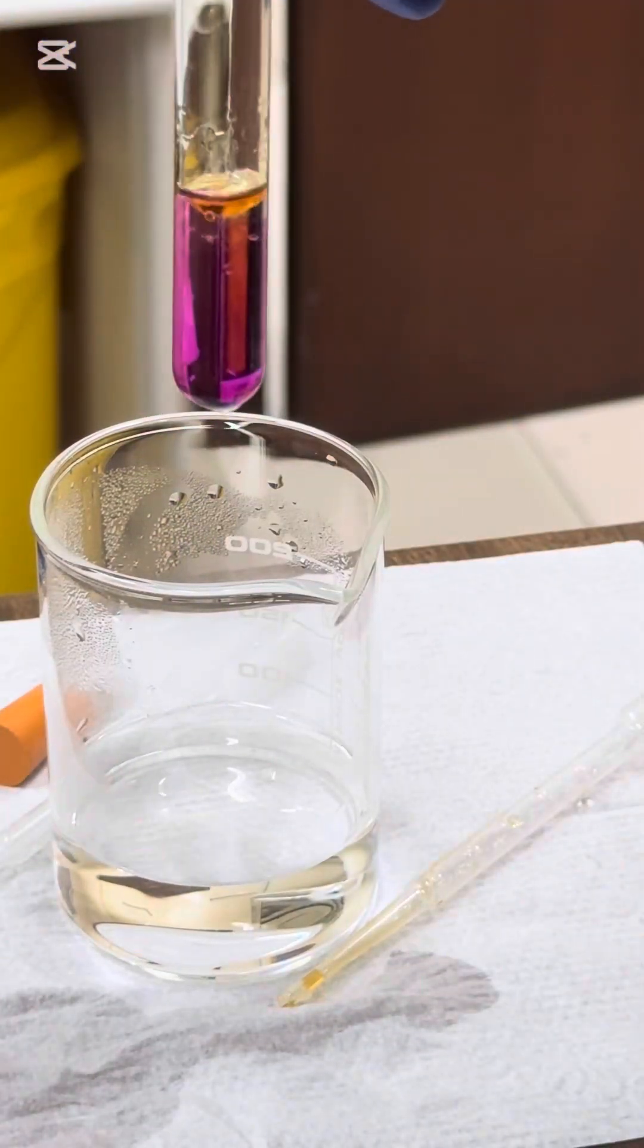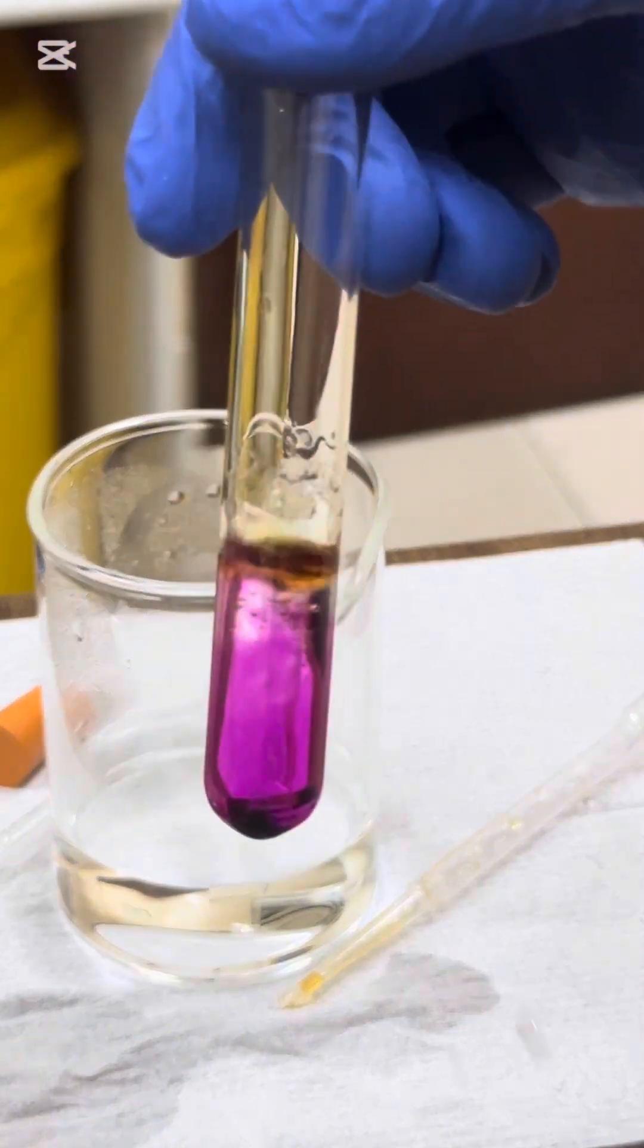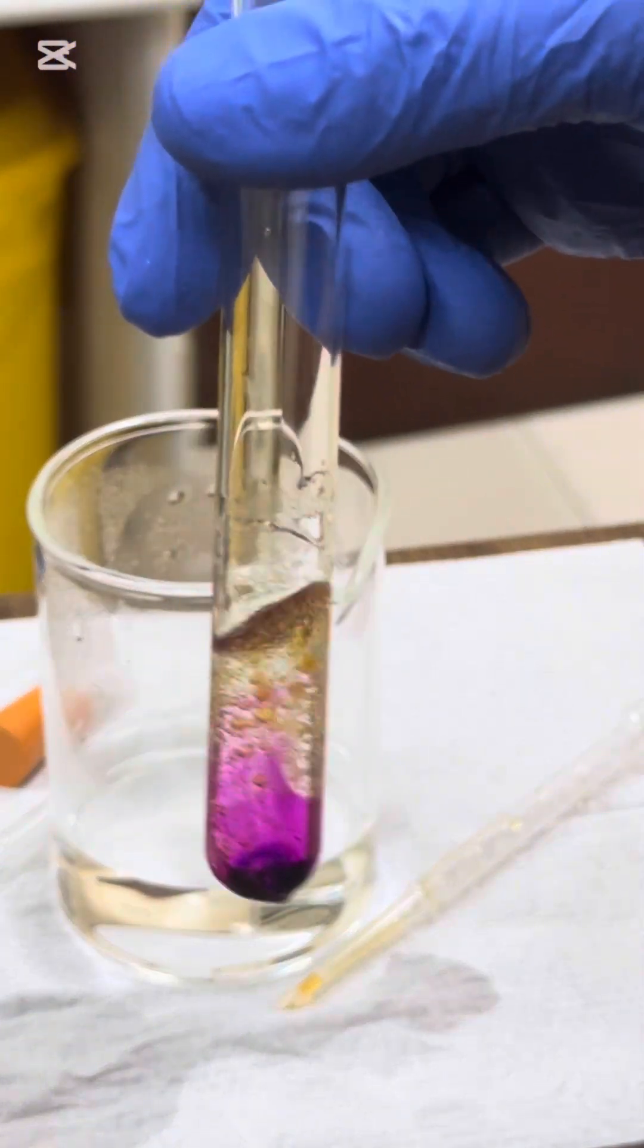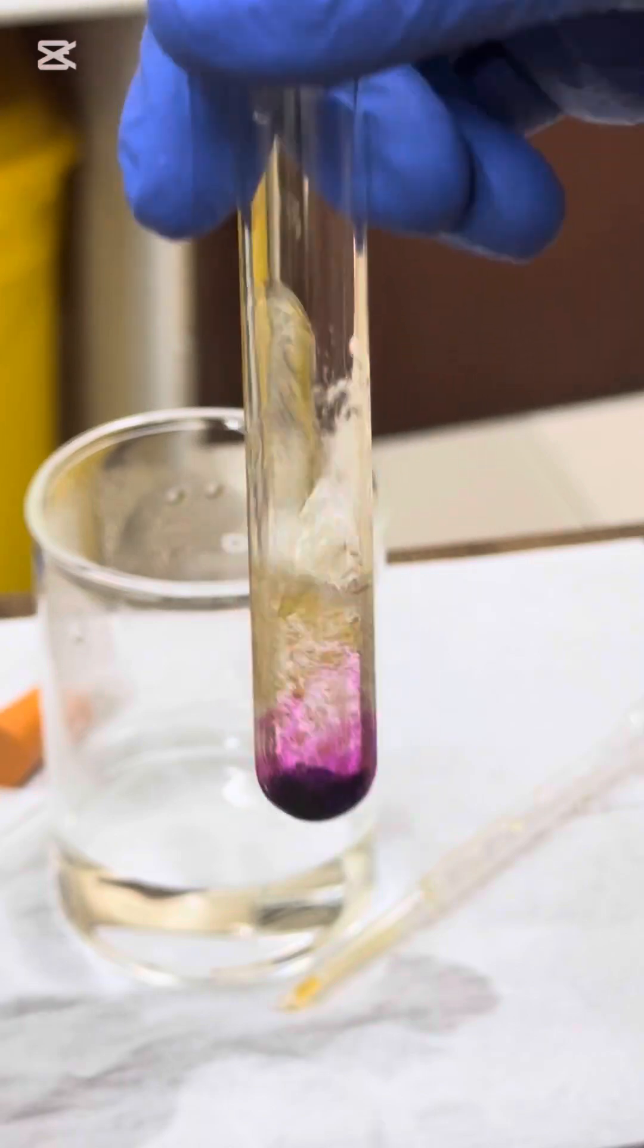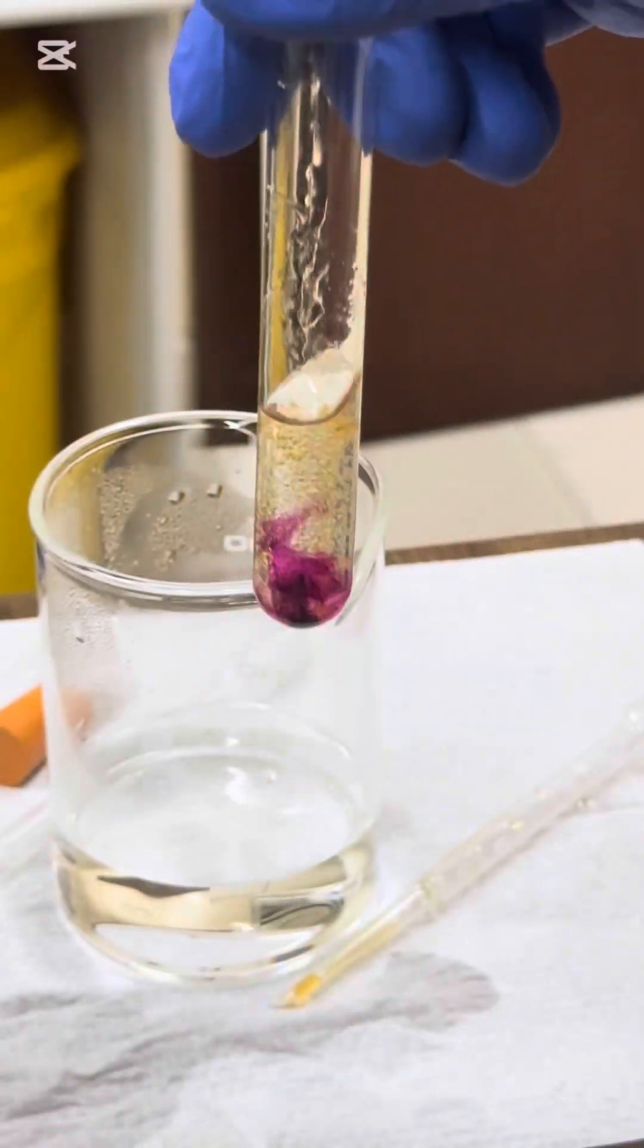I'll just give it a little waggle, and now already you can see that there is a decolorization. So, the color of the potassium manganate 7 solution is changing from purple to colorless, and that color change means that this reaction can be used,